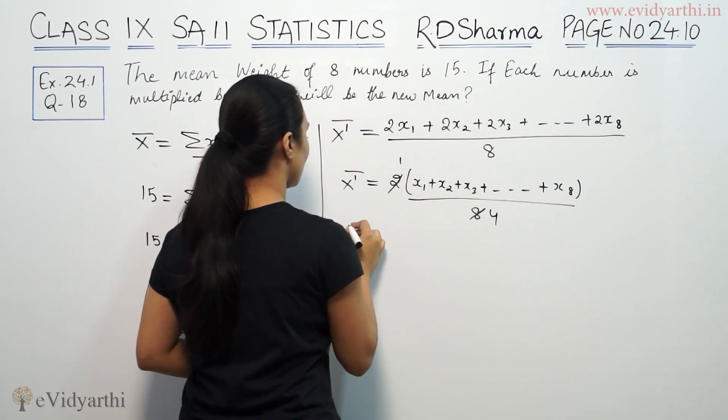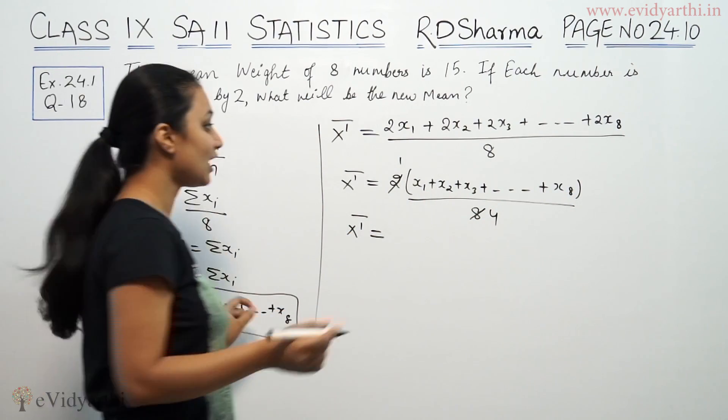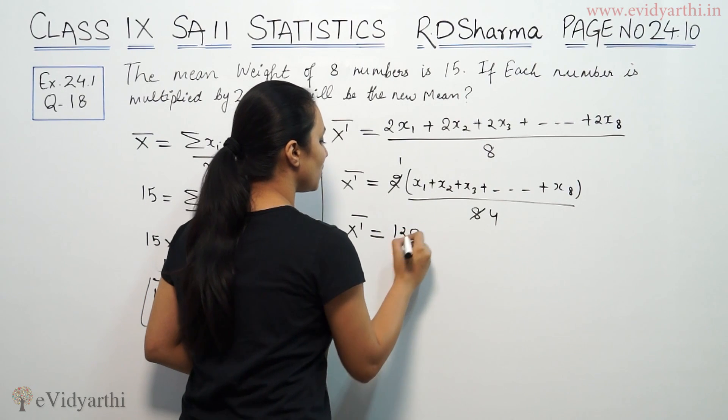2 comes up. So, x dash bar is equal to this whole thing whose value we have as 120. So, we substitute that. So, 2 times 120 by 8.